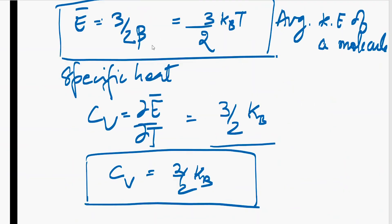We can substitute the beta with kB T, so 3 by 2 kB T is average kinetic energy of a molecule. And we know that there are 3 degrees of freedom, so we can collect this.